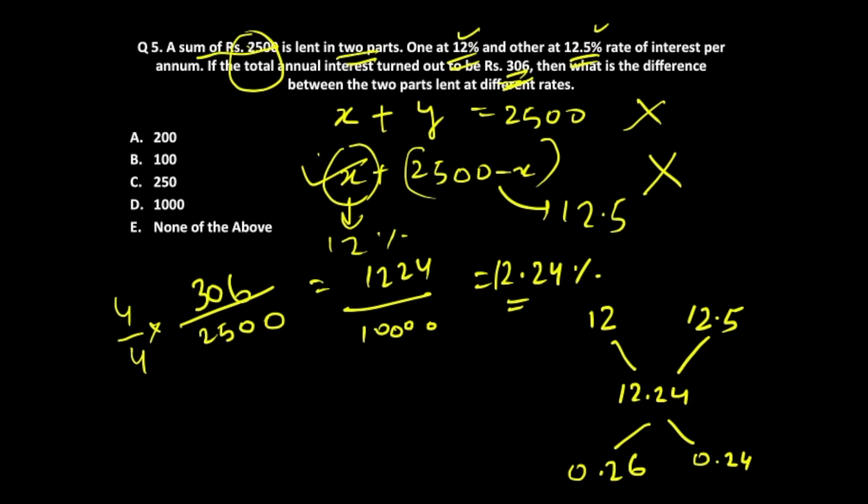So the ratio becomes 13:12, meaning the sum is divided into Rs. 1300 and Rs. 1200. This gives a total of Rs. 2500. We've been asked for the difference between the two parts: 1300 - 1200 = 100 rupees. So B is the answer.